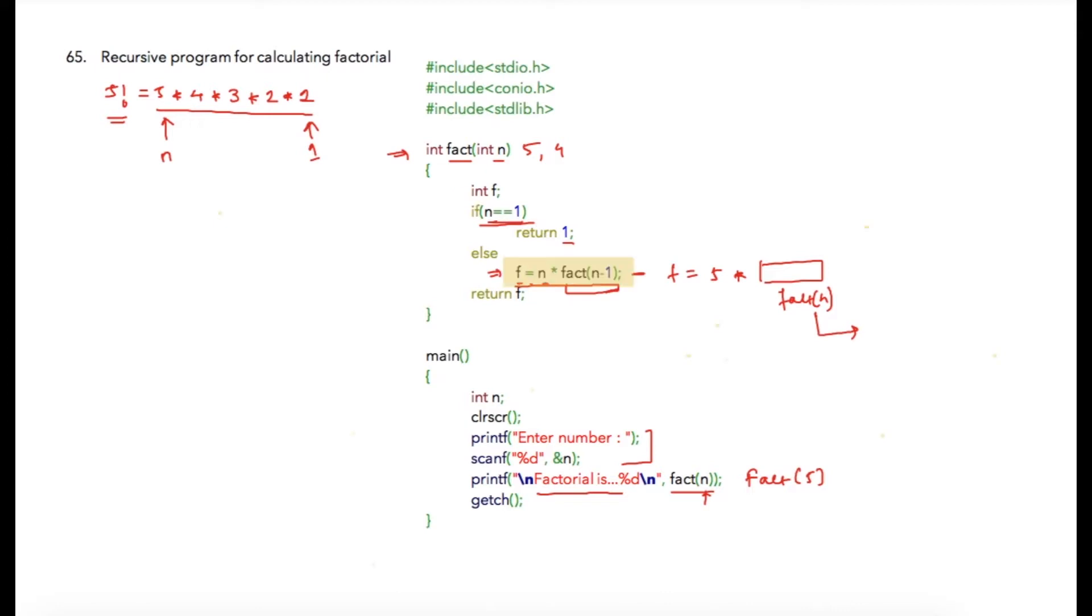We have 3 multiplied by factorial of 2, then 2 multiplied by factorial of 1. Once this call is made, this condition will be true and the function will return 1. This will be substituted as 2 multiplied by 1, so 2 will be returned. This will be substituted as 3 multiplied by 2, which equals 6, and this will be passed over here.